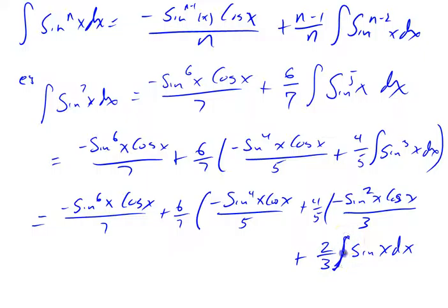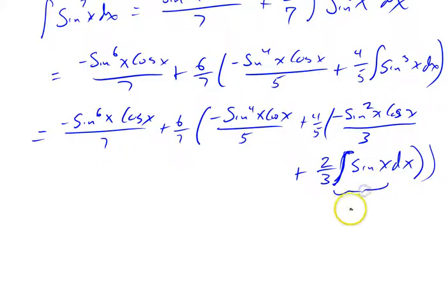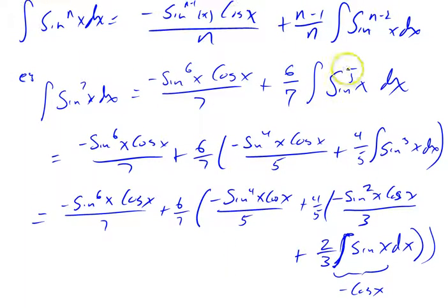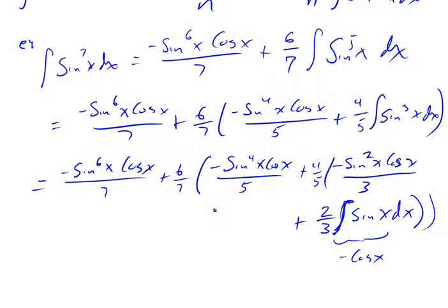I know the integral of sine x — it's just negative cosine x. So the integral of sine to the 7th is this thing plus 6 over 7 times all this stuff, which is this plus 4 over 5 times all that stuff. A telescoping integral: each integral gives you the integral of something else, and using exactly the same formula with a different value of n. Anyway, that's the notion of the telescoping integral. There are a couple of them in this section, and we'll see them again in the next section as we run into different types of integrals involving trig functions.